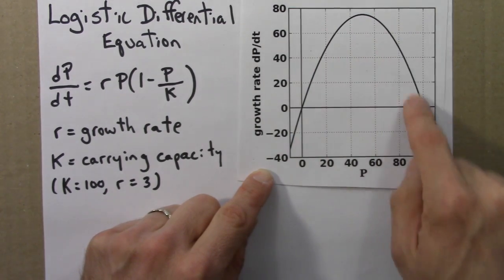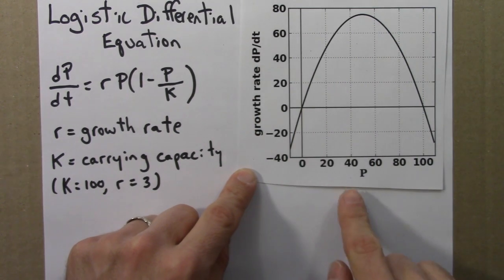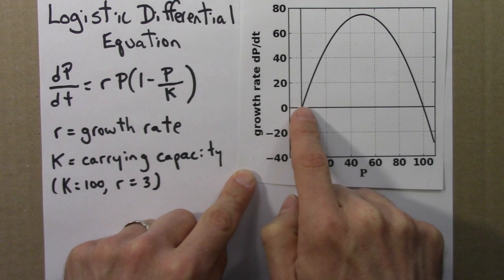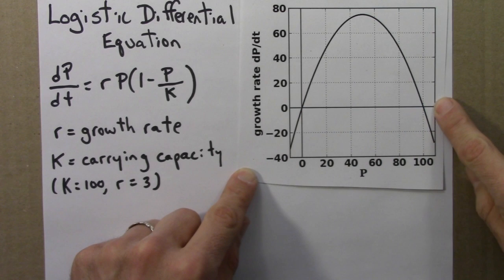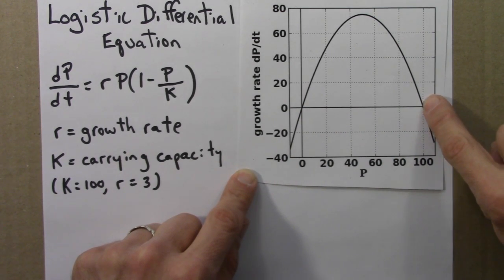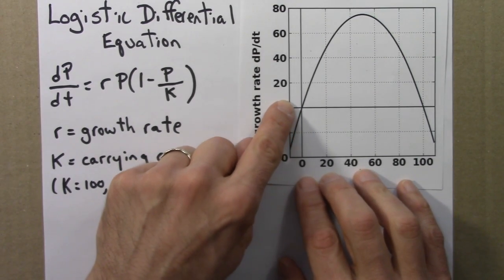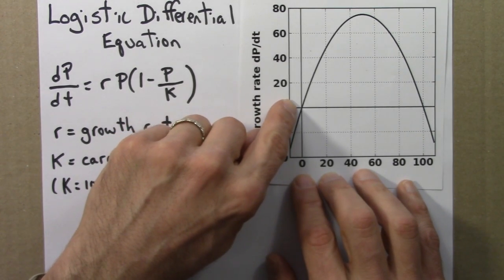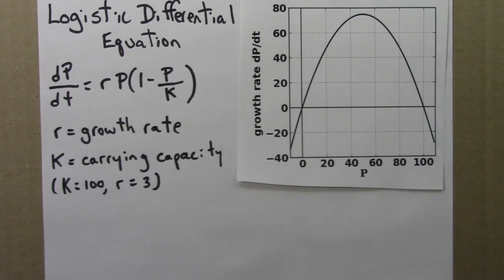When this function is positive, that means the growth rate is positive and the population is increasing. So, any population that's a little bit larger than 0 or less than 100 will increase. If the population is larger than 100, the growth rate is negative, so the population decreases. If the population is less than 0, that doesn't really make any sense. But, mathematically, if the population were negative, the growth rate would be negative, so it would push that number to the left. So, we can draw a phase line for this.